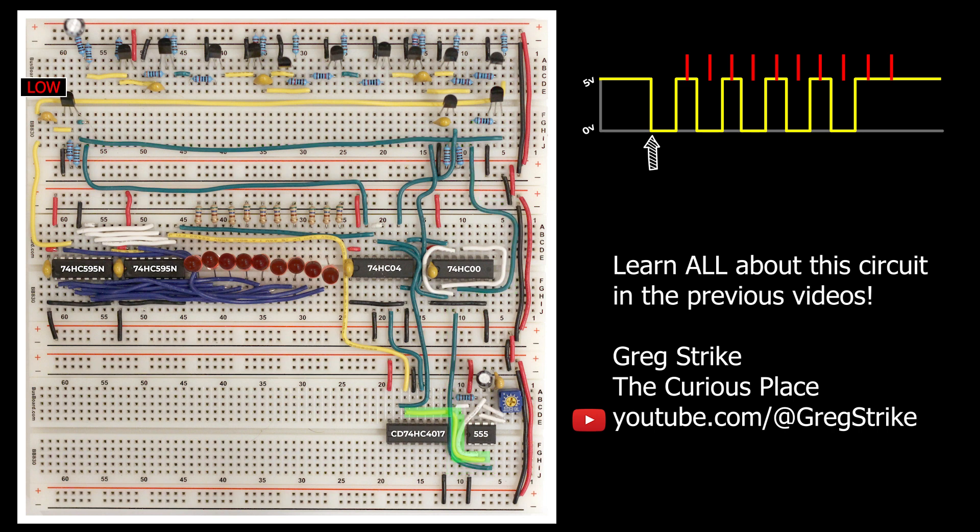The clock signal is this yellow line coming from the 555. It's fed to the counter as well as to the shift registers. By the time the first bit is ready on the serial line, we get our first pulse of the clock, which signals the counter to count and the shift registers to latch the current bit.